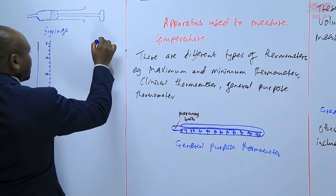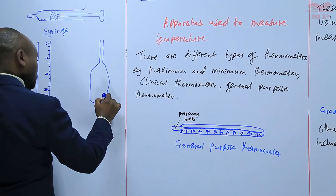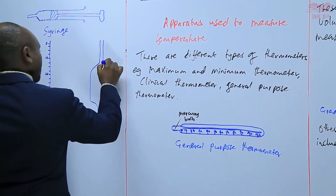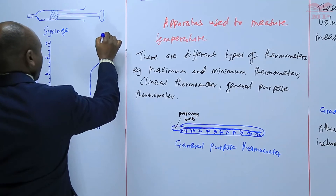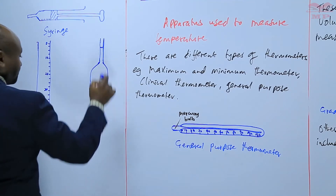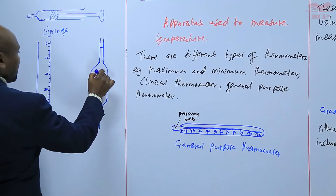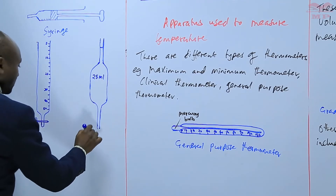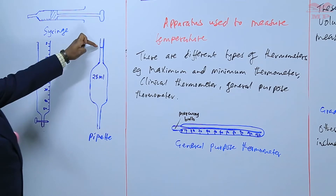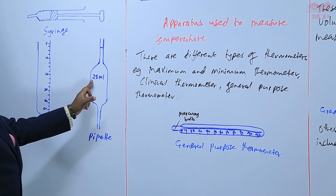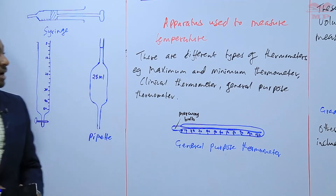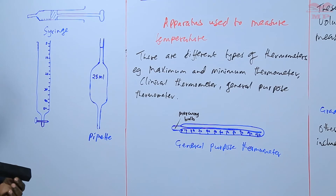We have the pipette. A pipette measures a certain specific volume. For example, we have the 25 milliliters pipette, which is the most common. The pipette — if you measure a liquid or solution up to the mark, that shows that you have exactly 25 milliliters or 25 cubic centimeters. Basically, these are some of the apparatus we use to measure volume.